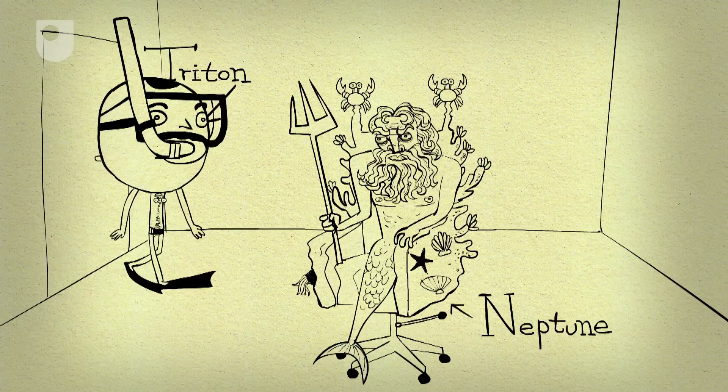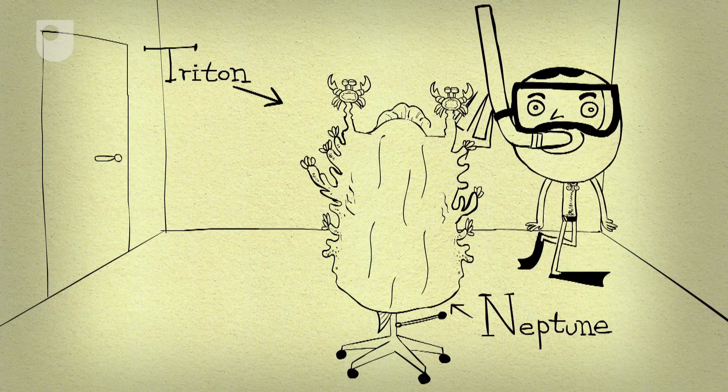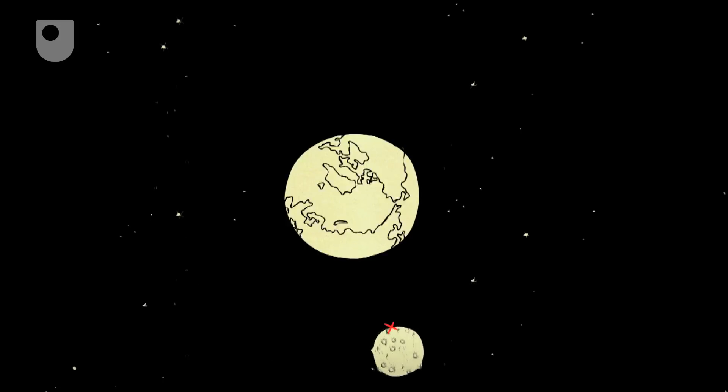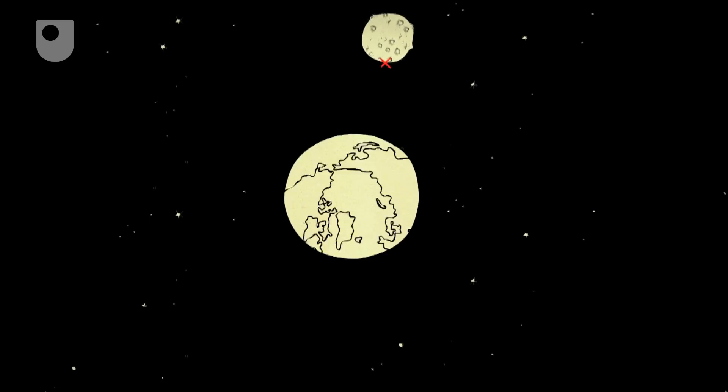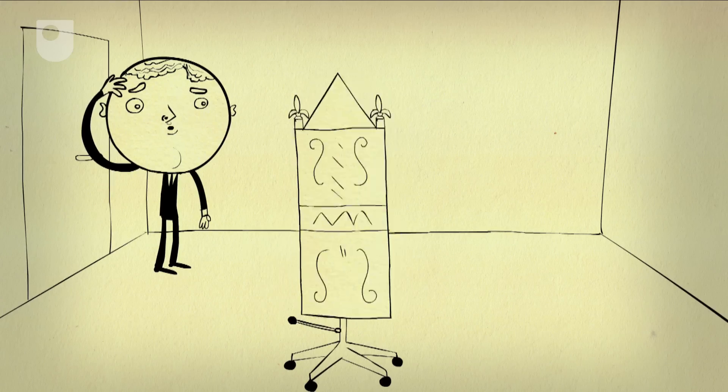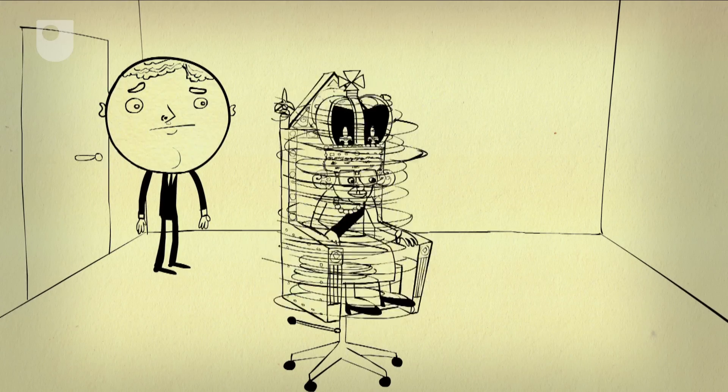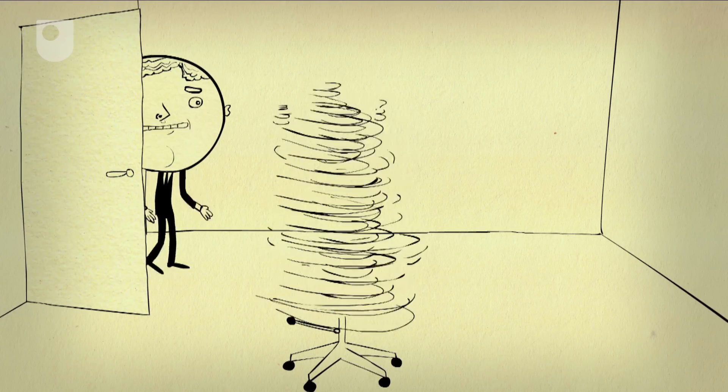The same thing has happened to most moons of large planets, but it doesn't work both ways, because while the Moon is spinning once every orbit, the Earth is rotating about 30 times faster. So from a vantage point on the Moon, you'd get to see us from all sides, if you stuck around long enough.